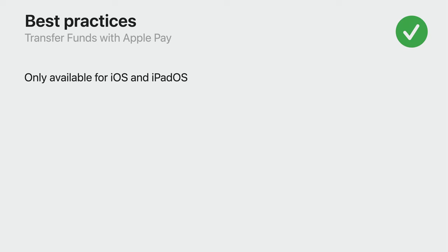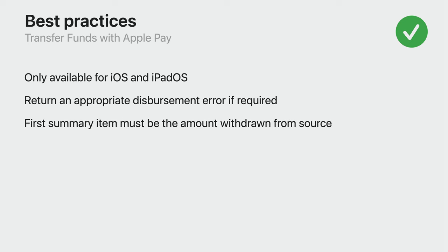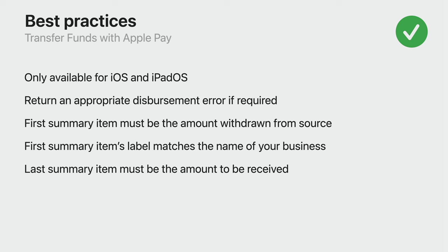Here are some best practices to keep in mind when implementing transfer funds with Apple Pay. Note that it is only available for iOS and iPadOS, and is unavailable for use on macOS or the web. If an error occurs during the processing of a funds transfer, use one of the dedicated disbursement errors to communicate this to the user effectively. The first summary item should represent the amount that will be withdrawn from the user's account, and its label should match that of your business. The last summary item must represent the amount that will be received by the user's payment card, net of any fees, charges, or adjustments.